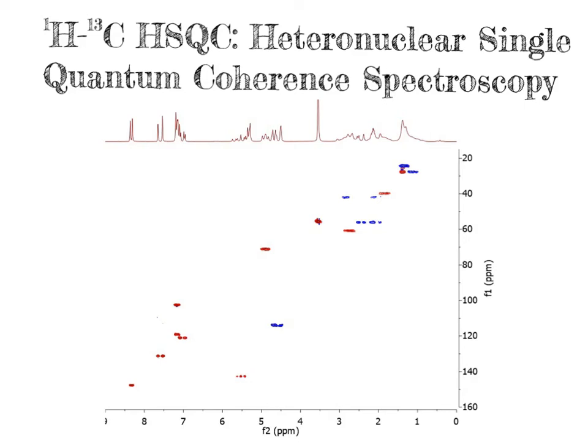In the last video we began to look at two-dimensional NMR spectroscopy by focusing on correlation spectroscopy, or COSY for short. In the COSY experiment, we were looking at which protons are spin-coupled to one another, and by looking at the x and y axes and finding cross peaks, we could determine which proton signals were spin-coupled. We refer to that as a homonuclear correlation experiment because we are looking at two of the same type of proton, meaning two different hydrogen atoms.